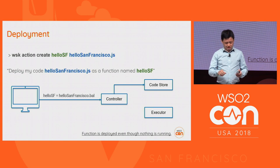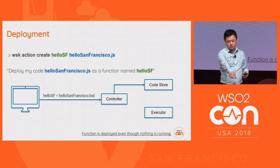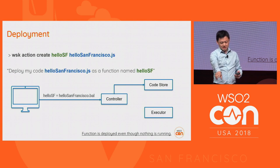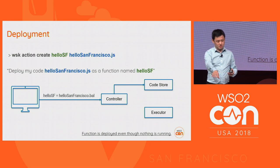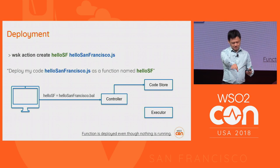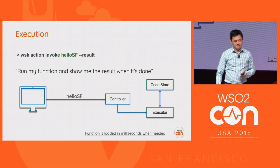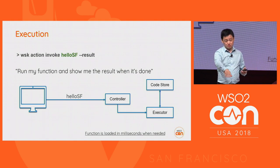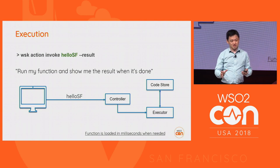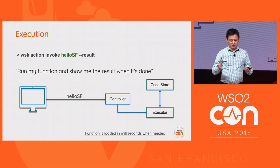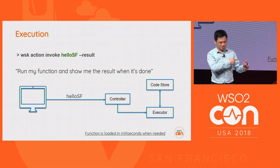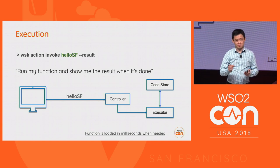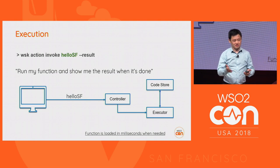Just to show you exactly what happened: when I ran that command, I sent code through the endpoint called a controller to a code store. That's it — the function is now deployed even though there is no container running it at the moment. When I ran it, it says run the function. It goes to the controller, which asks the executor to run my program. It will go get the program and run it — all in about 11 milliseconds, not including network traffic. That's why serverless is different: it's fast enough that you can actually do this in real time.